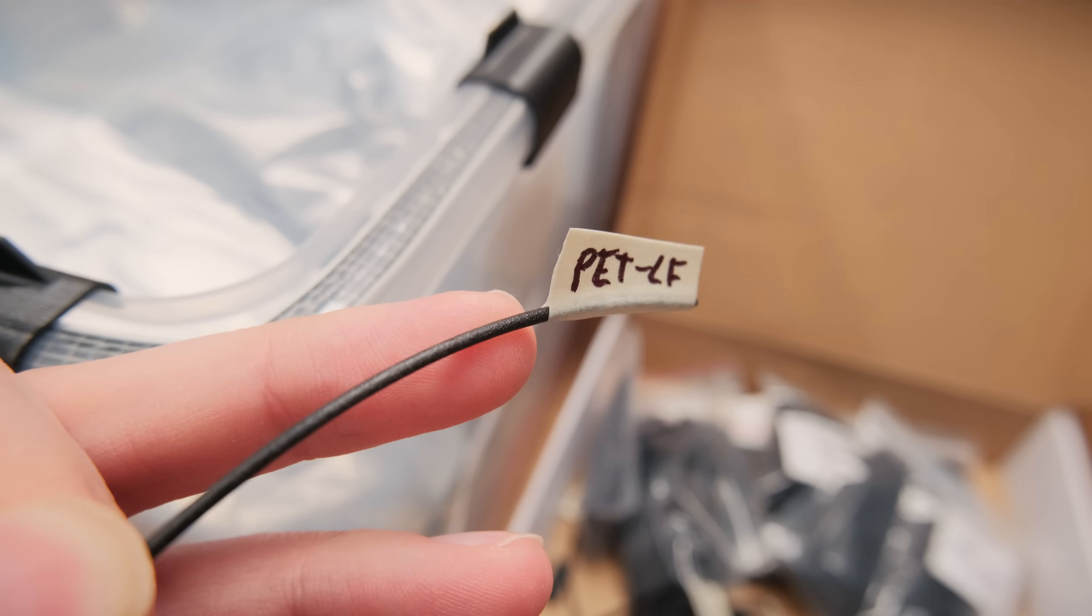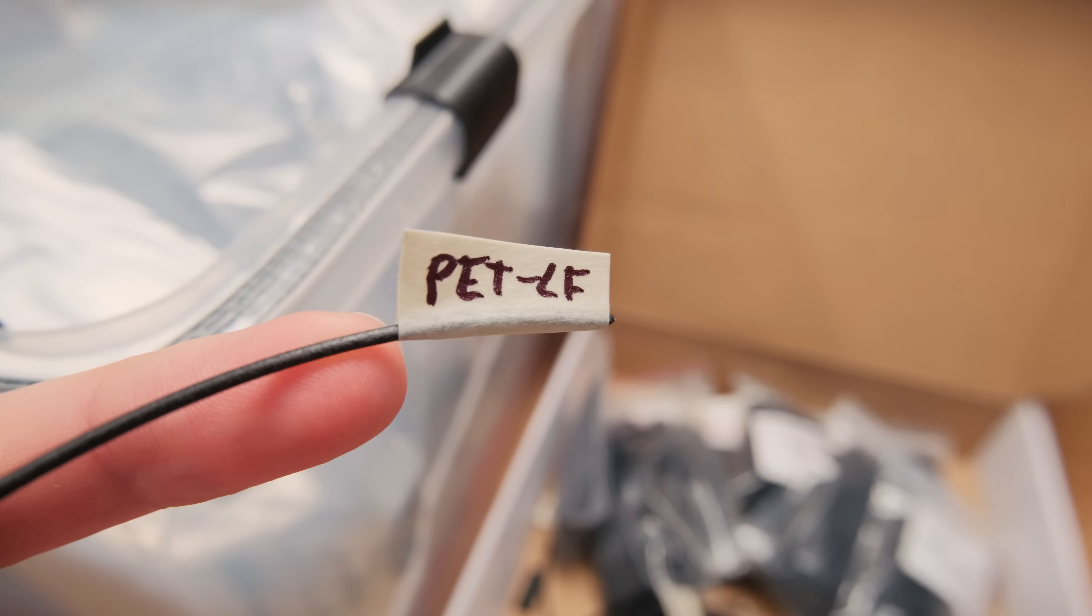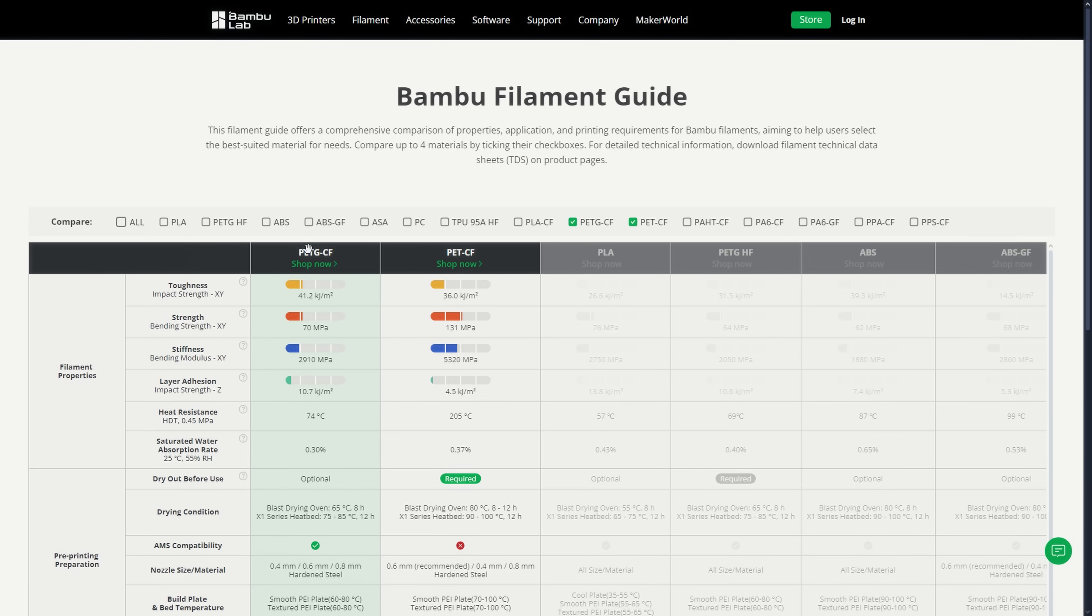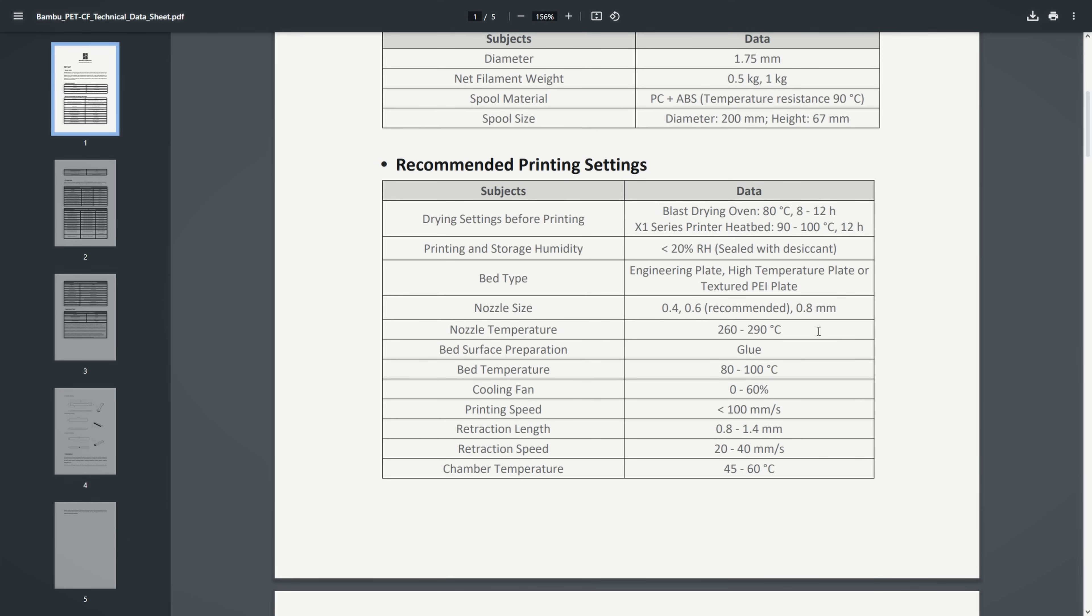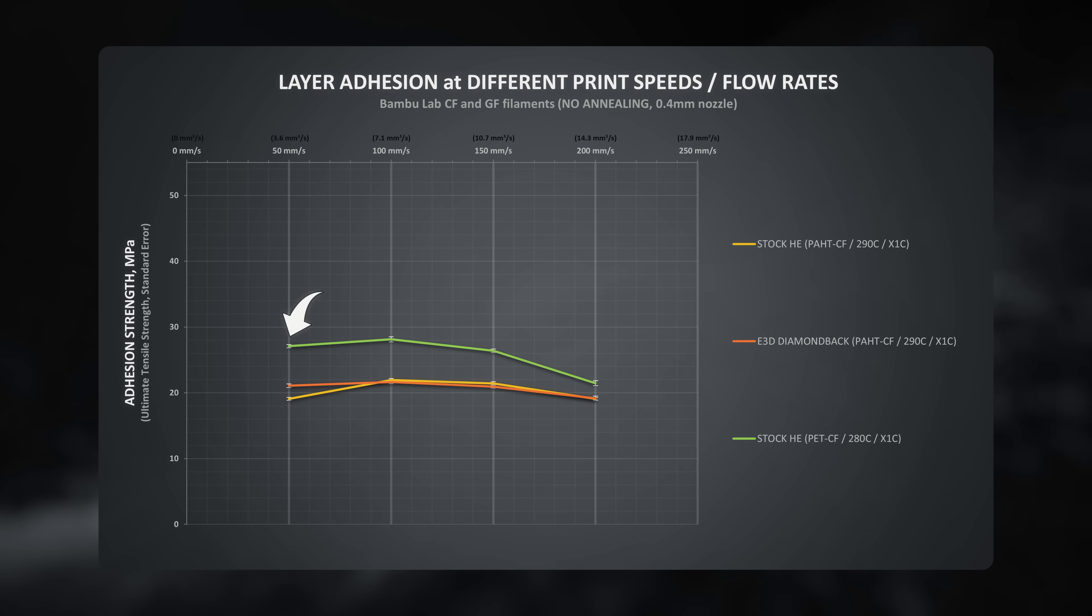Next on the list is the carbon fiber filled PET filament. Don't mistake it for the regular PETG-CF filament, as PET-CF is on a different strength level. From this point I decided to print 10 degrees colder than the maximum recommended temperature. Using the stock hotend, PET-CF filament had the same trend of having lower layer adhesion at lower speeds and flow rates. But this time, strength dropped by around 20% with faster printing speeds. Meanwhile using the Diamondback hotend, the adhesion dropped only by around 8%.